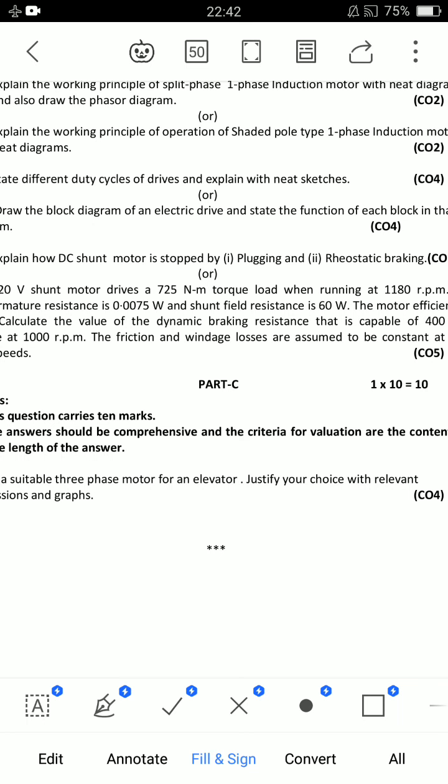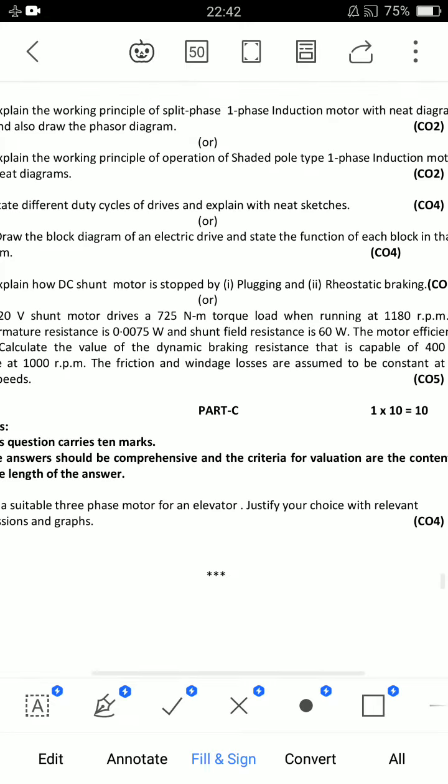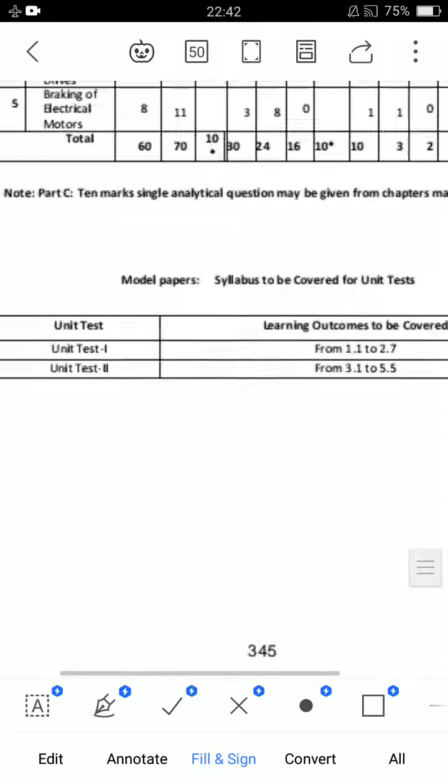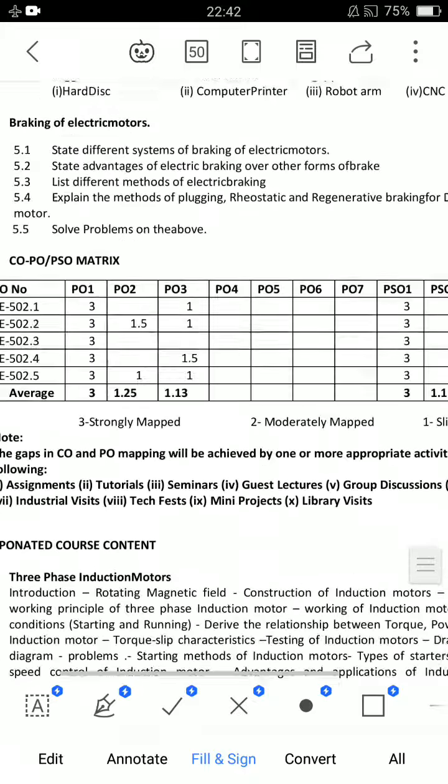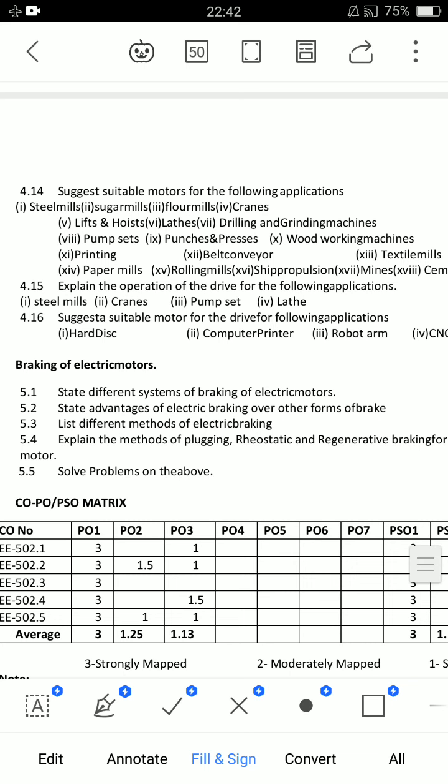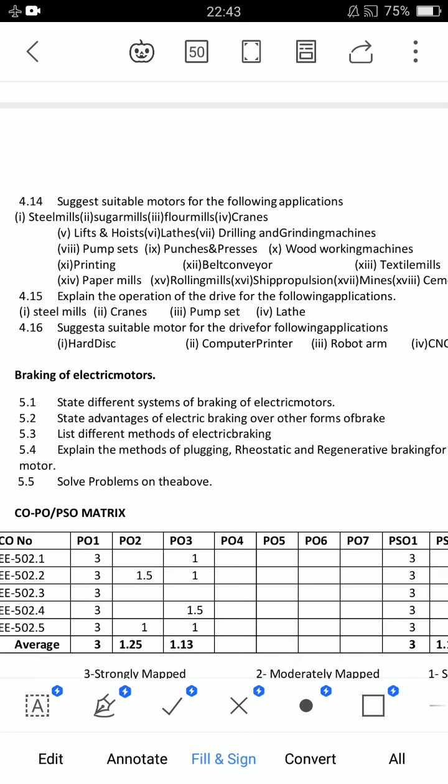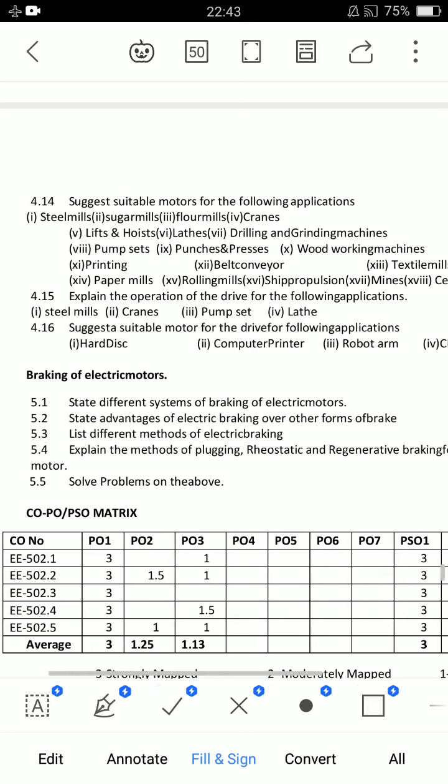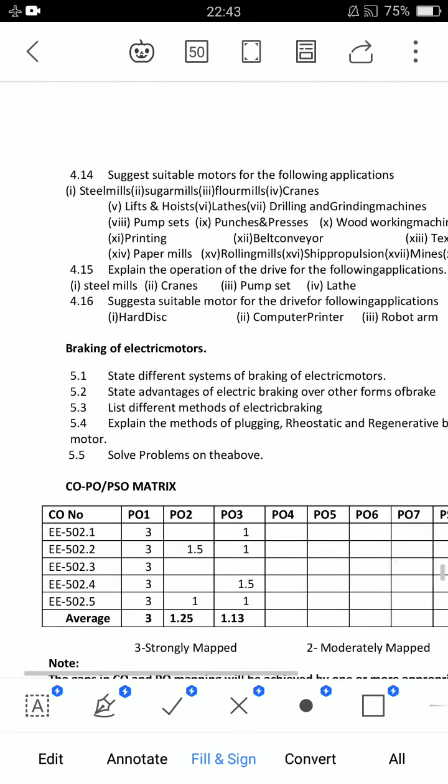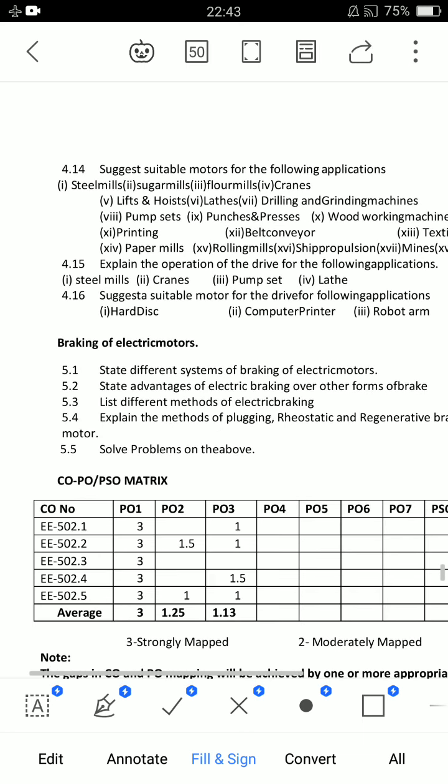I will explain how DC shunt motor is stopped using plugging and rheostatic braking methods. It is very very important. And related problems are solved. Okay, that's it. Shorts, if you have a 5th unit, you will have one unit. This is a small unit, 5.5.